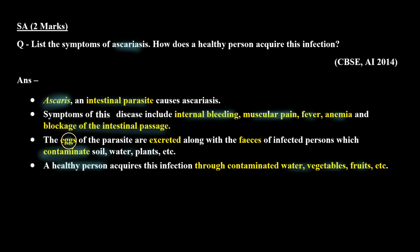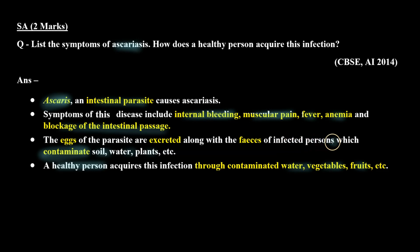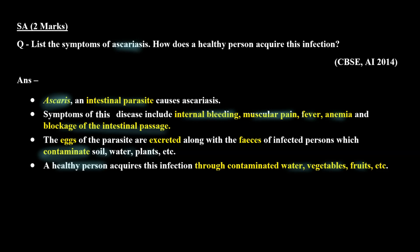Ascaris, an intestinal parasite, causes ascariasis. Symptoms of this disease include internal bleeding, muscular pain, fever, anemia, and blockage of the intestinal passage. The eggs of the parasite are excreted along with the feces of infected persons, which contaminate soil, water, plants, etc. A healthy person acquires this infection through contaminated water, vegetables, fruits, etc. I hope this question is clear to you. Thank you.